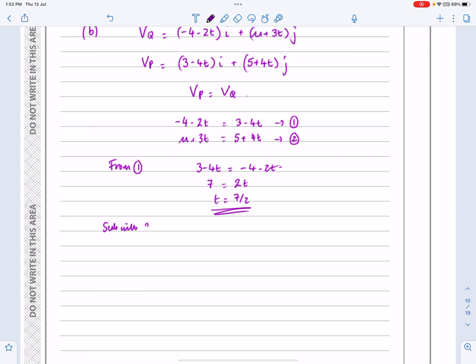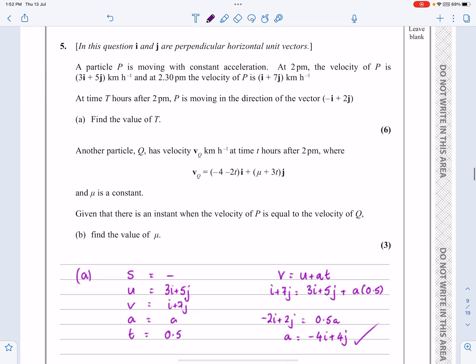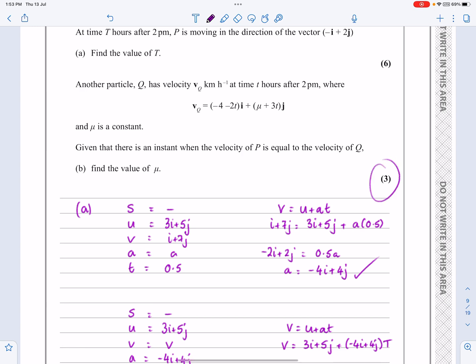So T works out to be equal to 7 over 2, so that's when this thing happens and if I put that into 2, sub into 2 now where I've got mu plus 3T is equal to 5 plus 4T. Well that happens when T equals 7 over 2 as well, so mu plus 3 lots of 7 over 2 is equal to 5 plus 4 lots of 7 over 2. And now the only thing I haven't got is mu, so mu plus 21 over 2 is equal to 19. So then mu works out to be 19 take away 21 over 2 which gives us 17 over 2. And that's all we wanted, we just wanted to work out what mu was. So that second part not that much more difficult, it's only worth three marks. Hopefully that question makes sense.